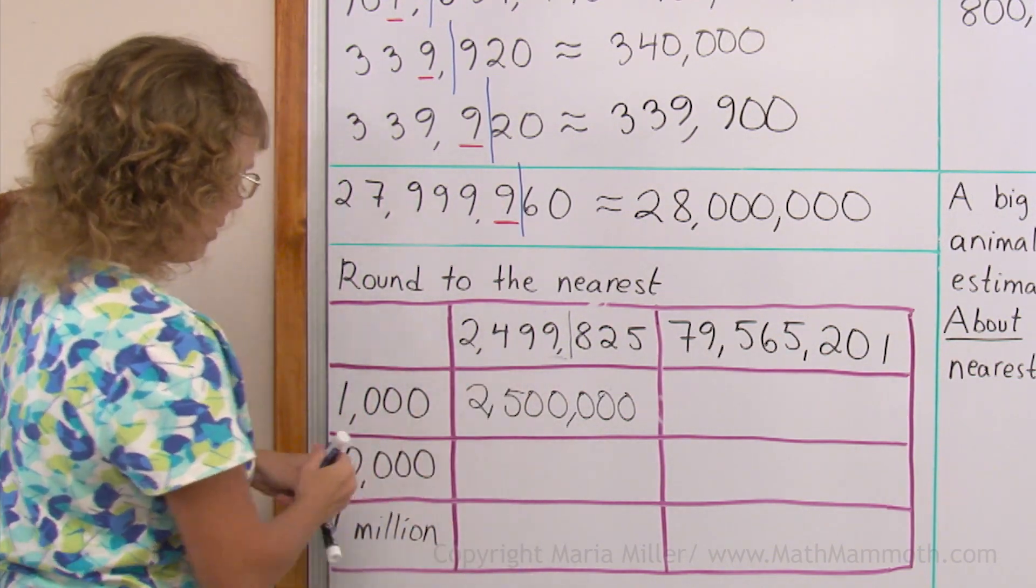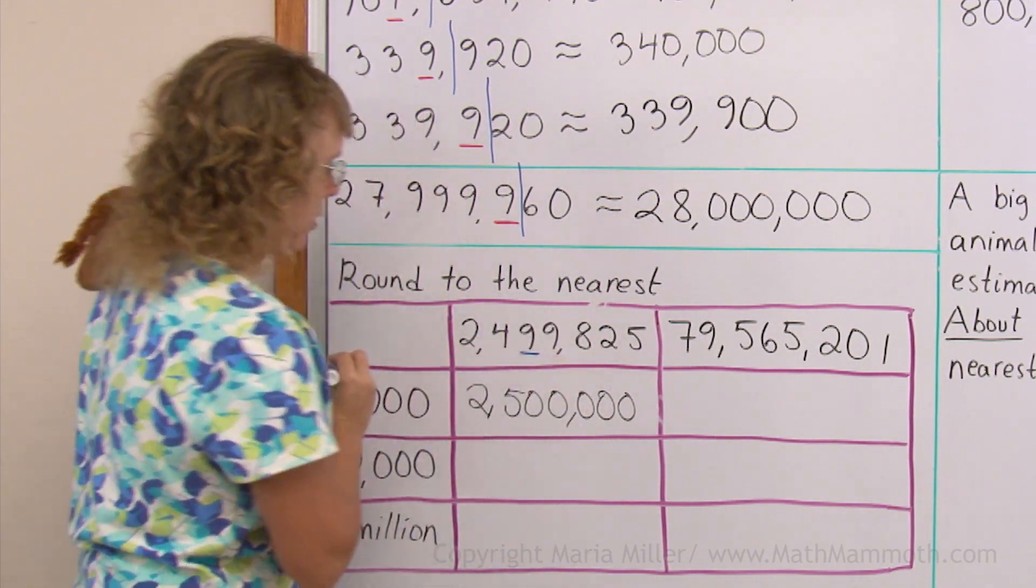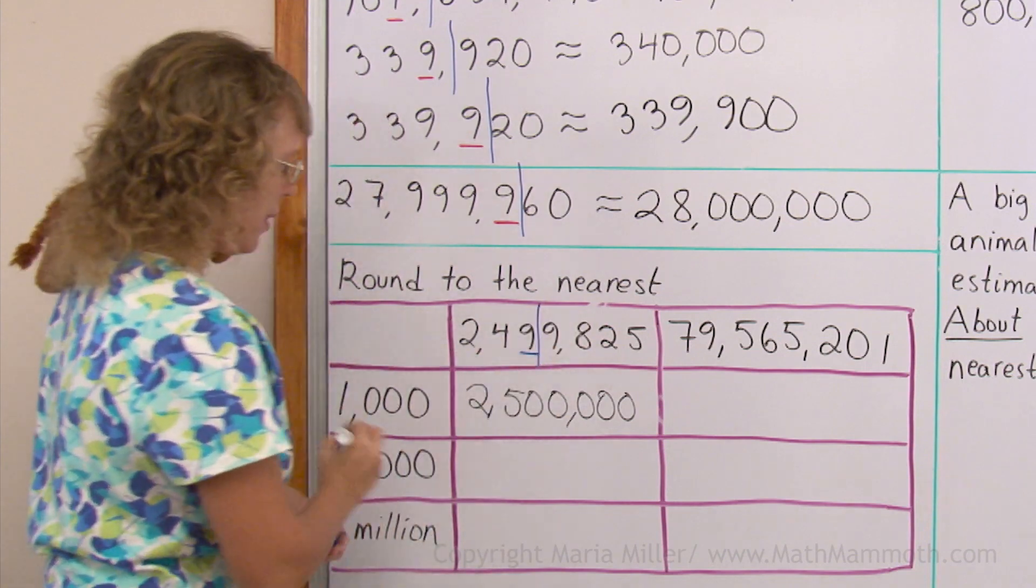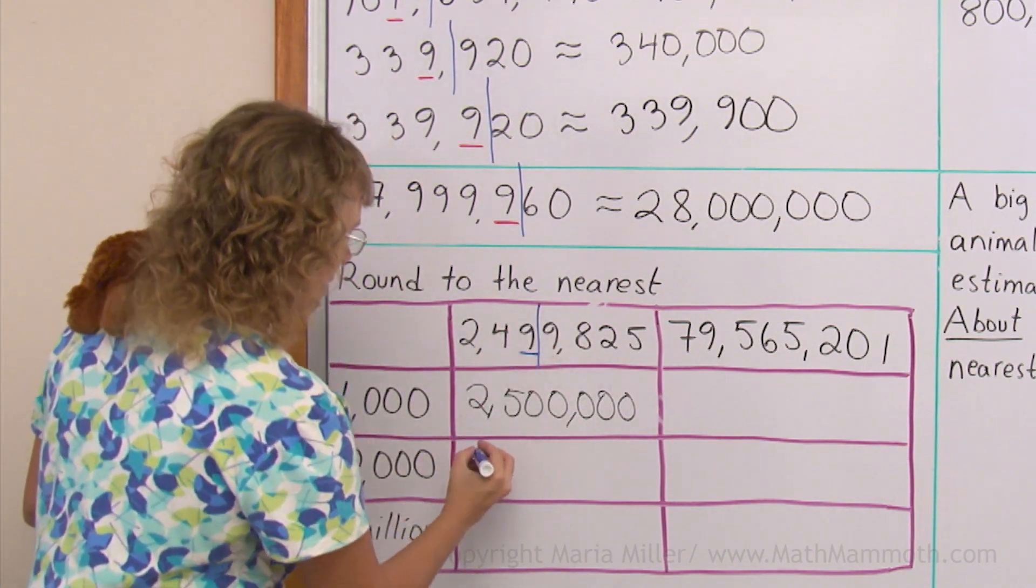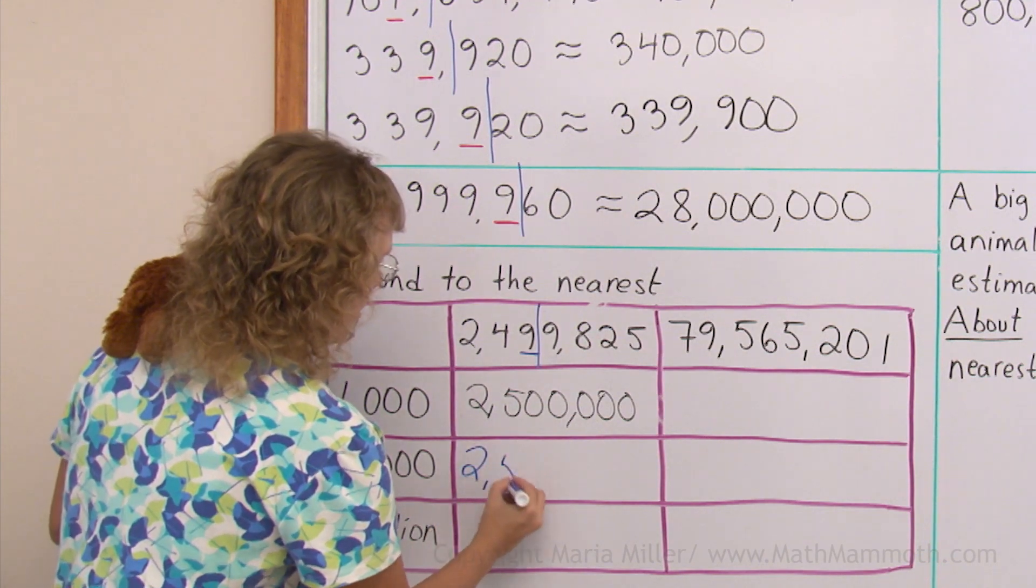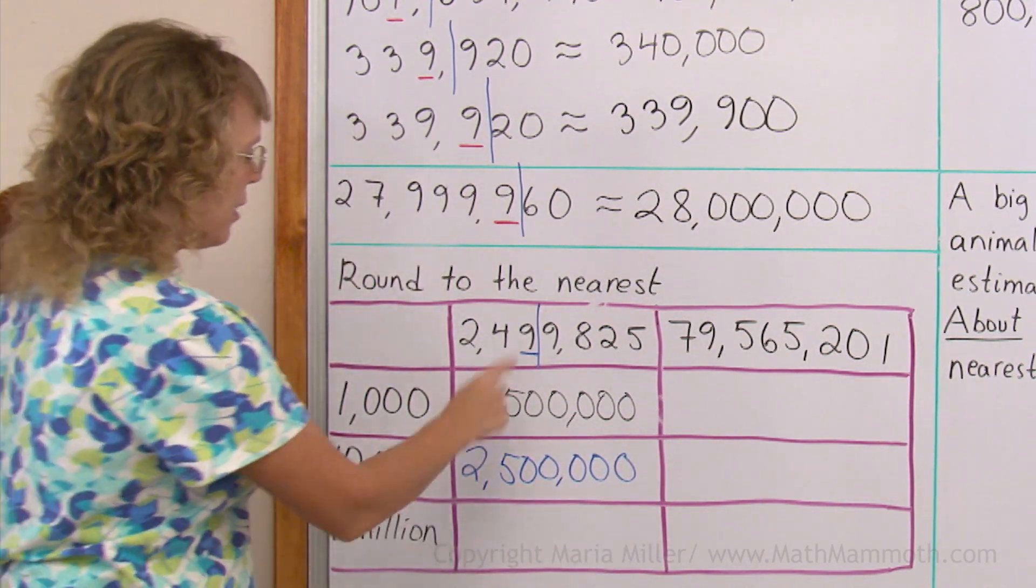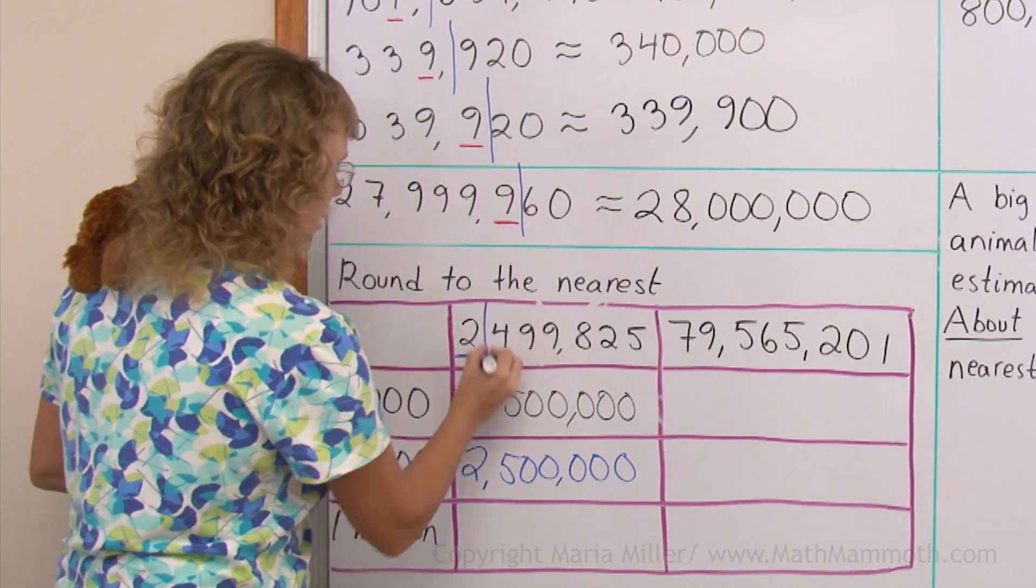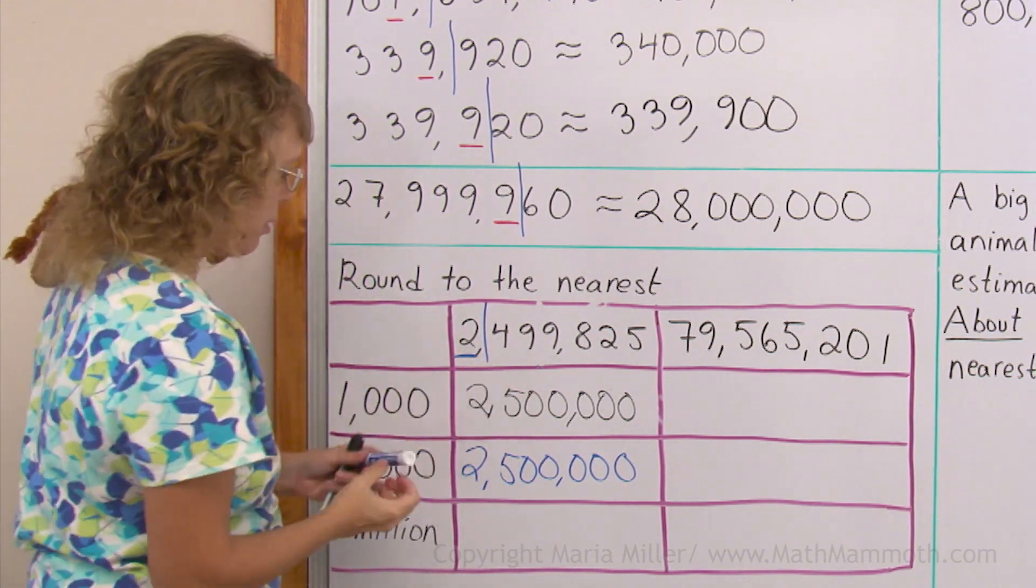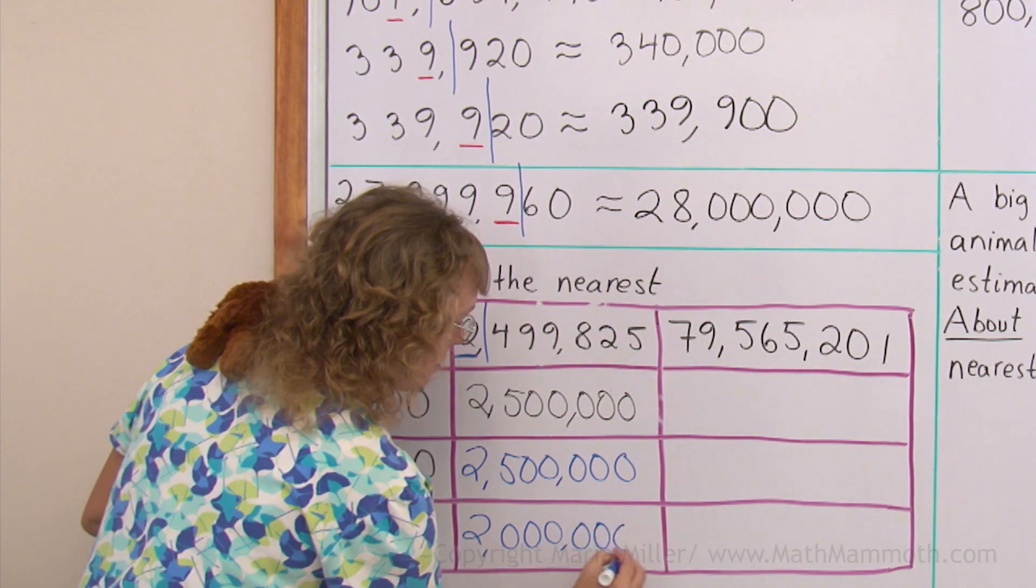Now, if we round the same number to the nearest 10,000, is 10,000th place, then 9 means we round up, we will get the same actually, like that. To the nearest million, is the millions place. 4 means we round down, so we get 2,000,000.